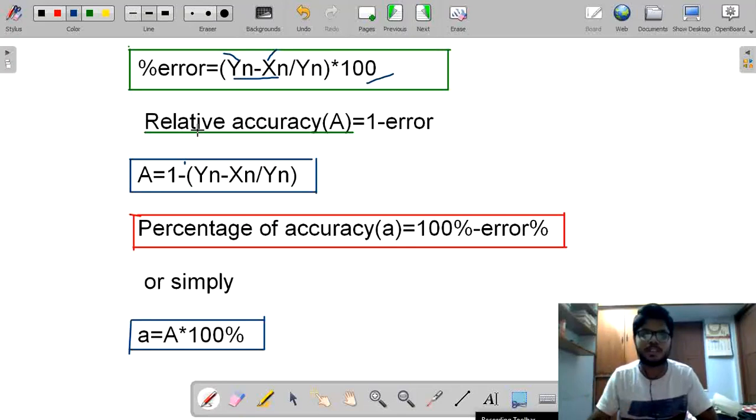Now, coming to relative accuracy. Relative accuracy is given by the notation capital A. How is relative accuracy defined? 1 minus error. Remember carefully, it is 1 minus error. If we remove error, we will get our original error. I mean, if we remove our error, we will get some required value. Now, what is 1 minus error? It is this error, right? yn minus xn by yn. It is a percentage of error.